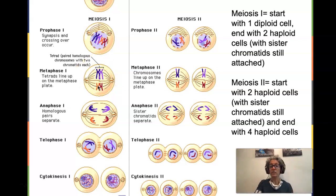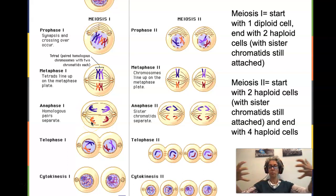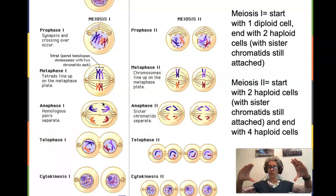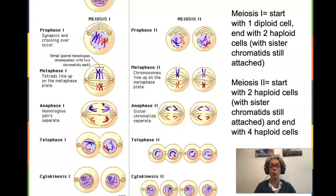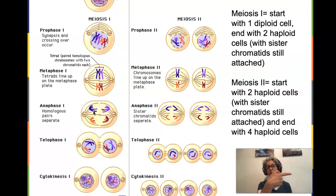In anaphase I, it is similar to mitosis — the kinetochore microtubules get shorter and that pulls what they're attached to apart, while the non-kinetochore microtubules get longer and elongate the cell. But we're not separating chromatids; we're separating chromosomes. This dark blue and this purple were a homologous pair, so one chromosome from the pair goes to the left and the other goes to the right. The entire single chromosome with its two chromatids goes one direction, and its homologous pair goes the other direction.